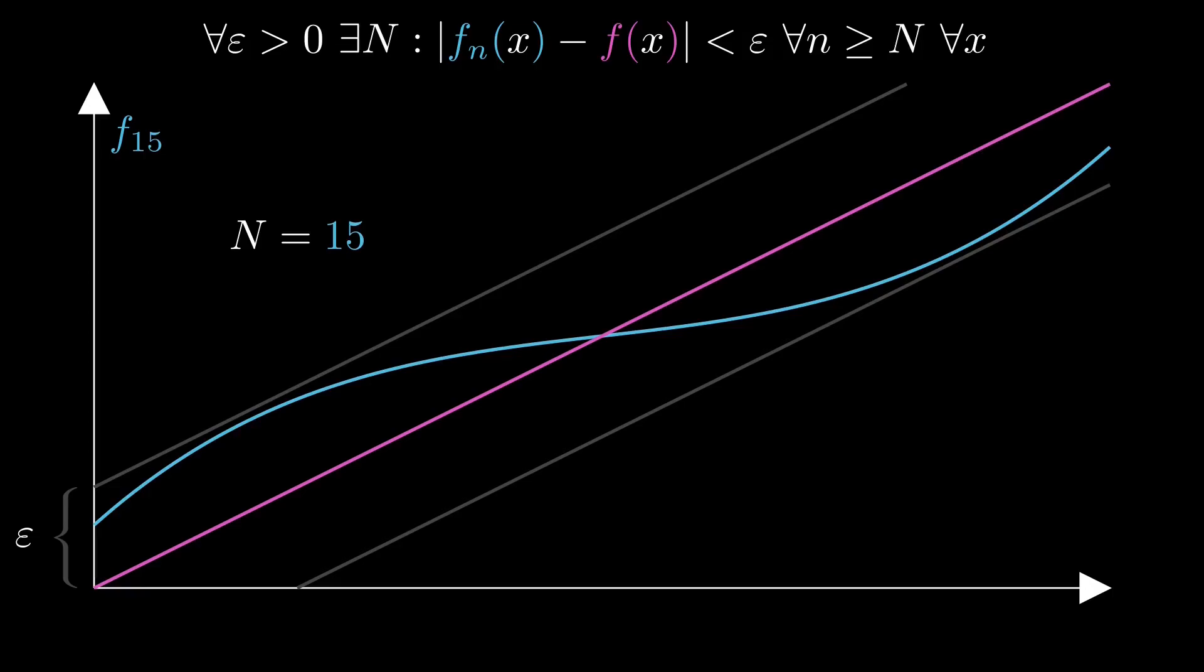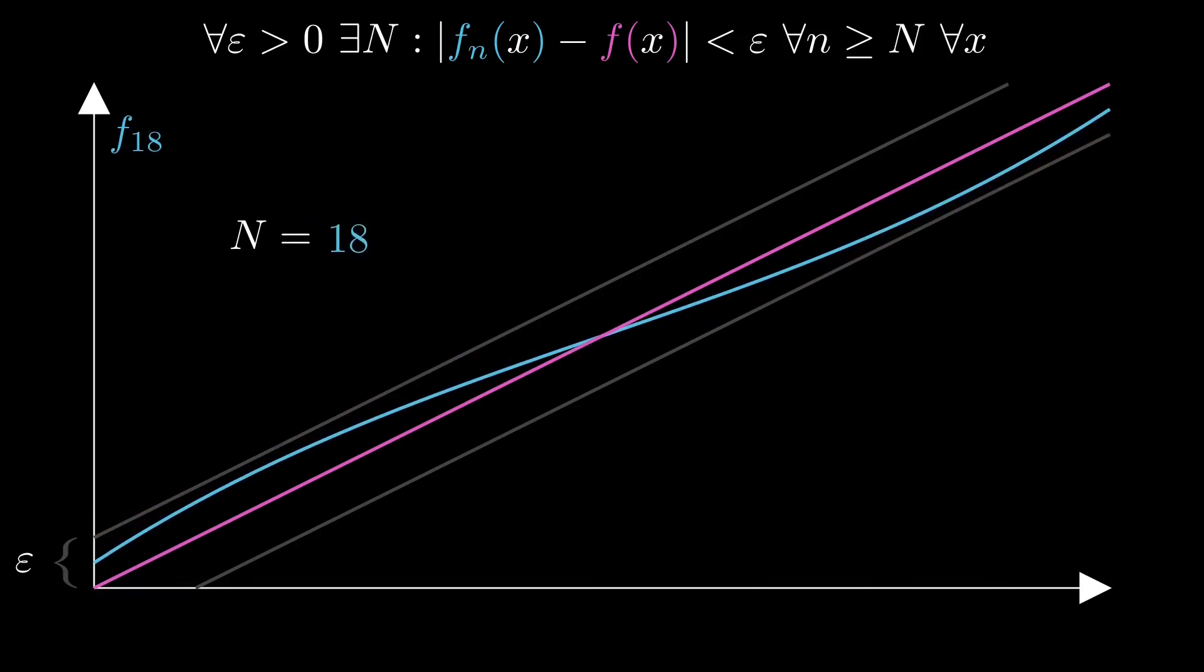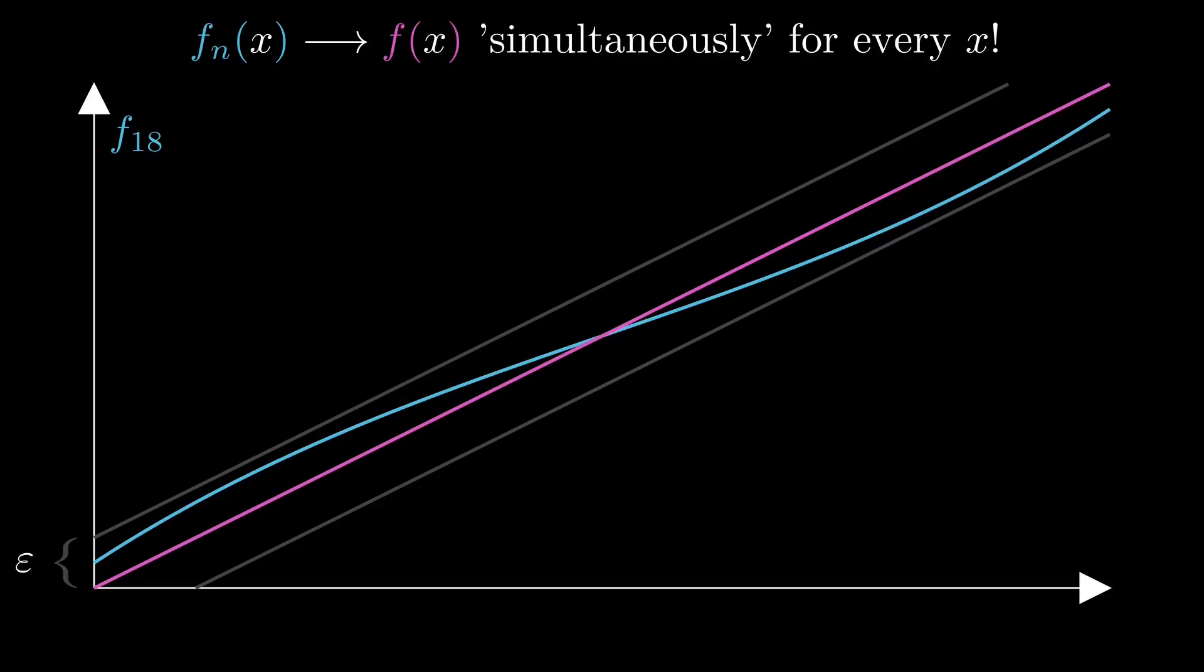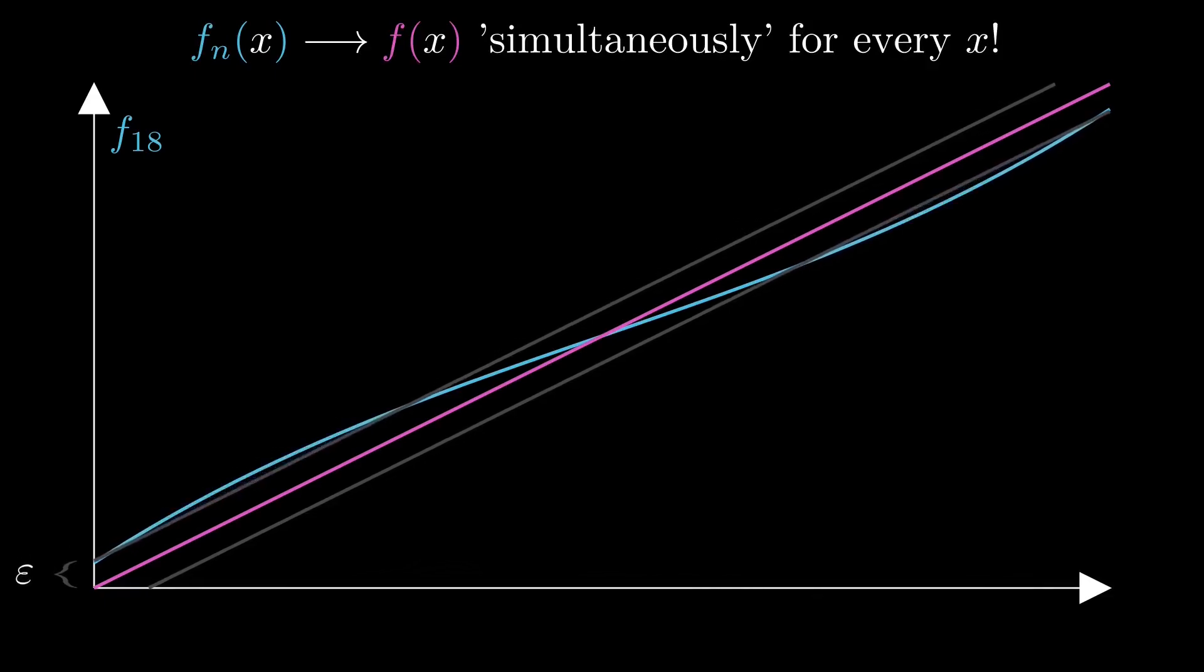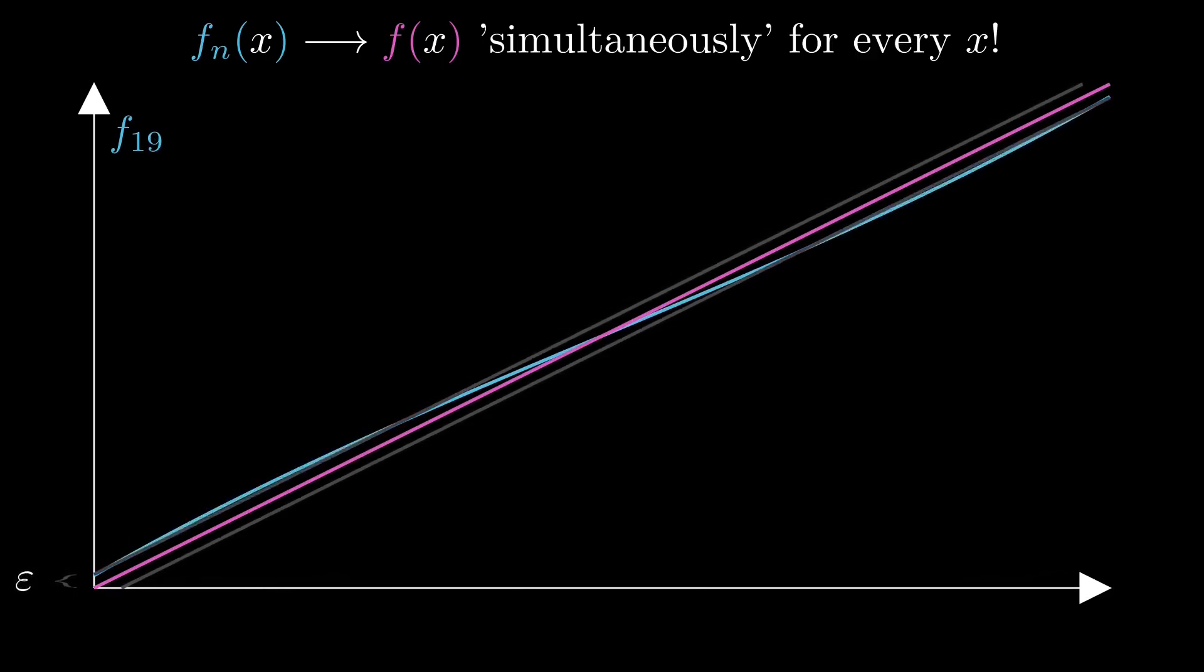Since the whole statement should be true for every epsilon bigger than zero, we can also choose a smaller one. We then again have some index big N, so that from then on, the distance from the limit function will be smaller than epsilon everywhere. As you see, when the convergence is not only pointwise but also uniform, the convergence of fn happens, roughly speaking, simultaneously for every x and not at very different speeds like in the example before.